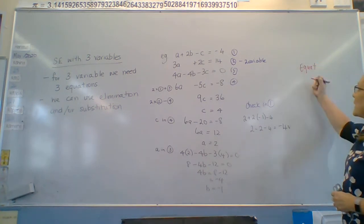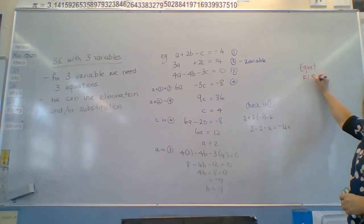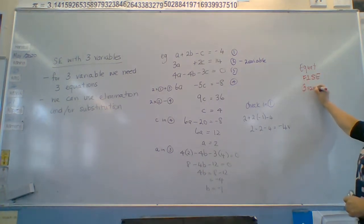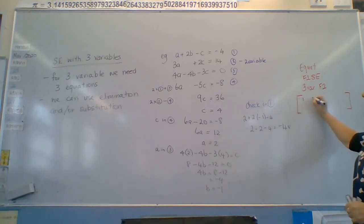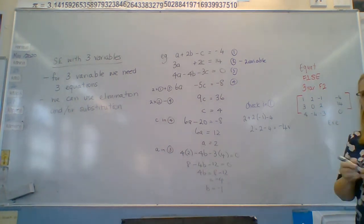So using our graphics calculator we need to go to equations all right we go to F1 I think it is for simultaneous we've now got three variables so that is F2 I'm going to say I have no idea anybody got their calculator I'll look at you F2 yes.